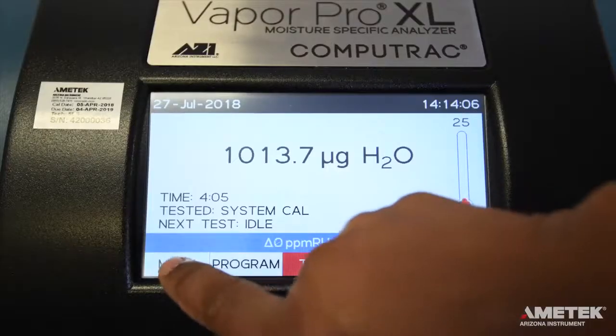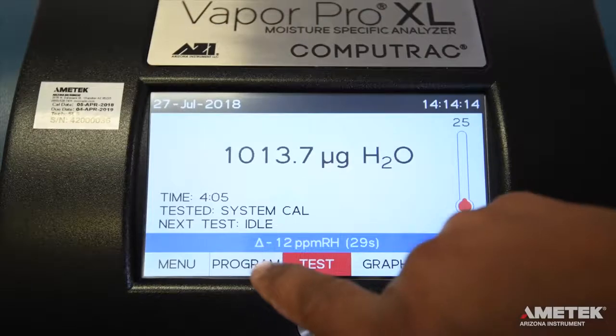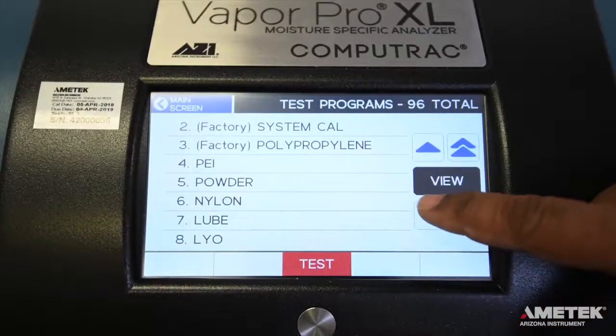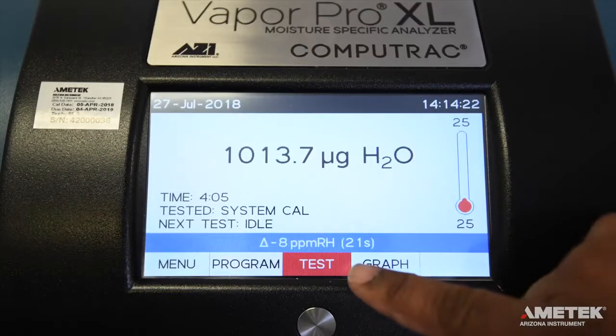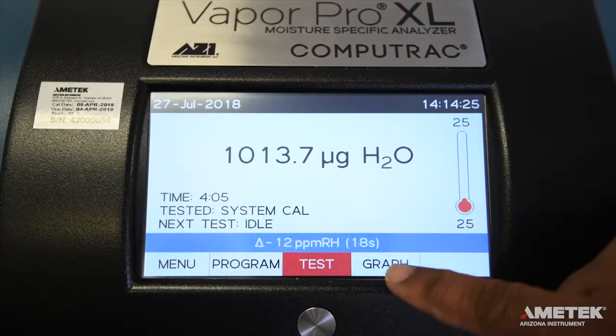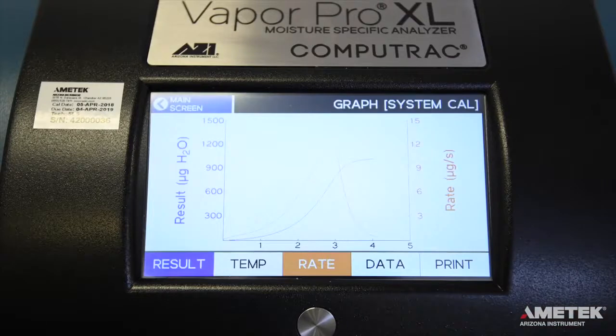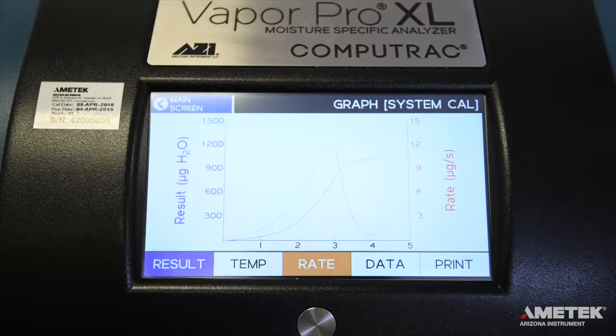Menu will take you to the main menu of the instrument, while program takes you to a list of programs that have already been added to the instrument. The test button is used to begin the next test, and graph shows you the graph of the currently running test or previously run test if there is no test currently running.